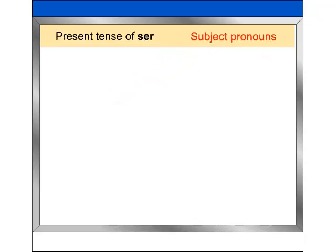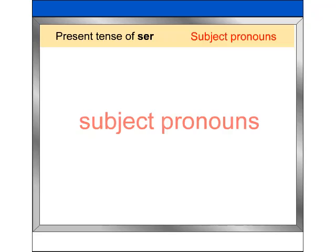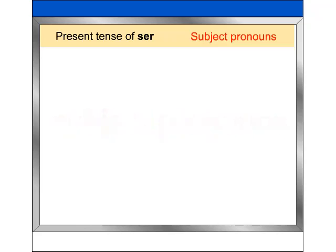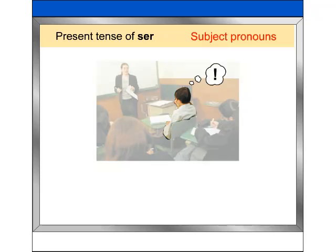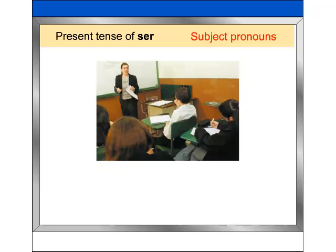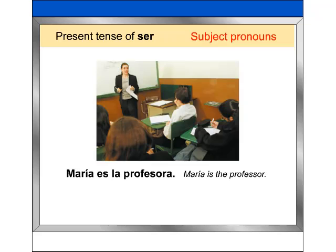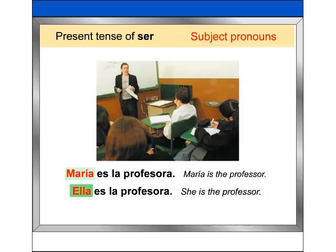To learn Spanish verbs, you first need to know about subject pronouns. A subject pronoun replaces a person, place, thing, or concept in a sentence and acts as the subject of the verb. For example, 'Maria es la profesora' can be restated as 'ella es la profesora.' The subject pronoun ella replaces the name Maria and acts as the subject of the verb ser.